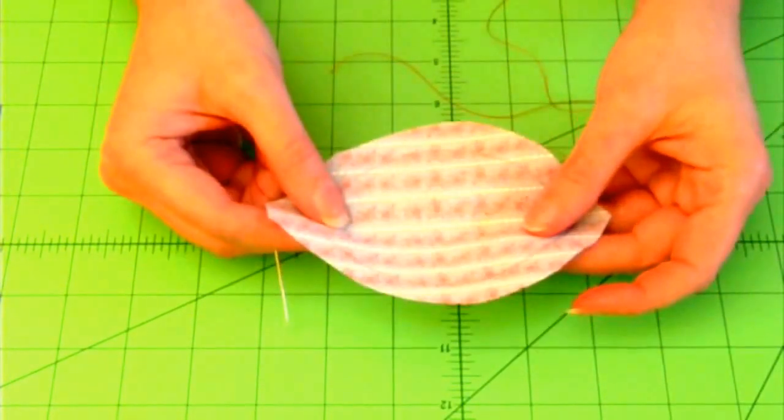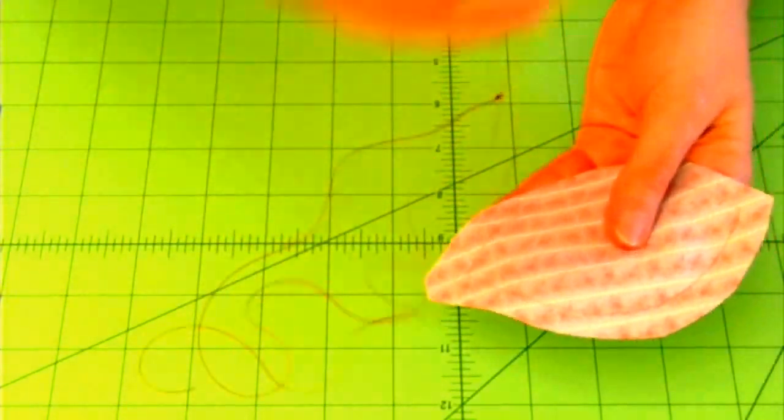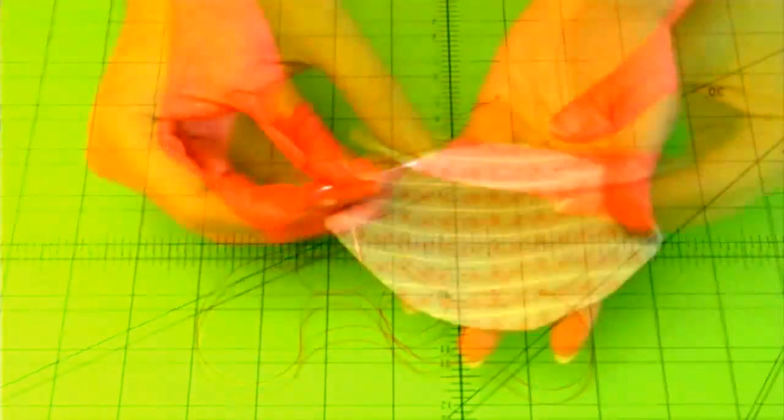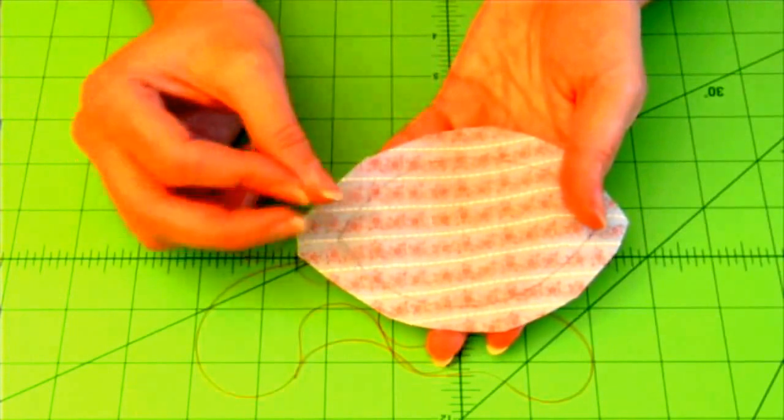Next, I'm going to do some stitching on this piece of fabric I've cut out. You're going to need a fairly long piece of thread on your needle.